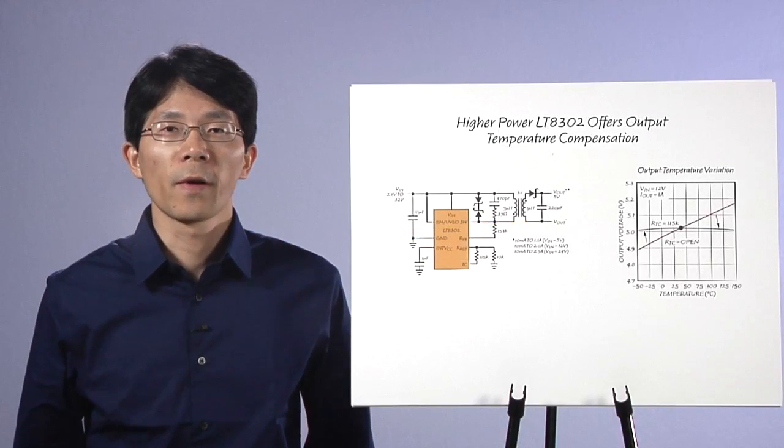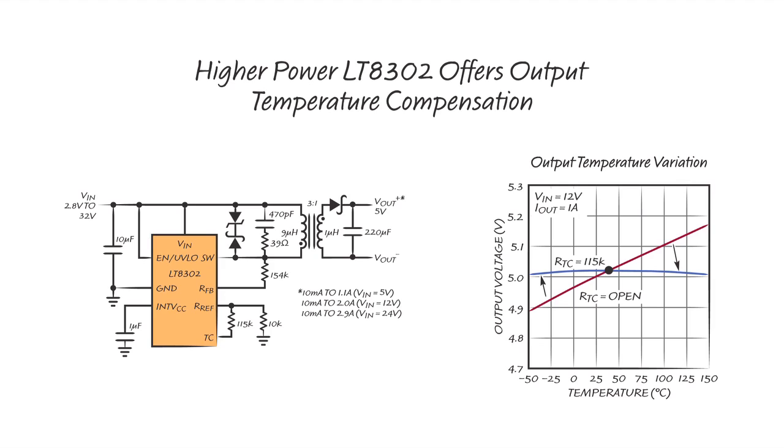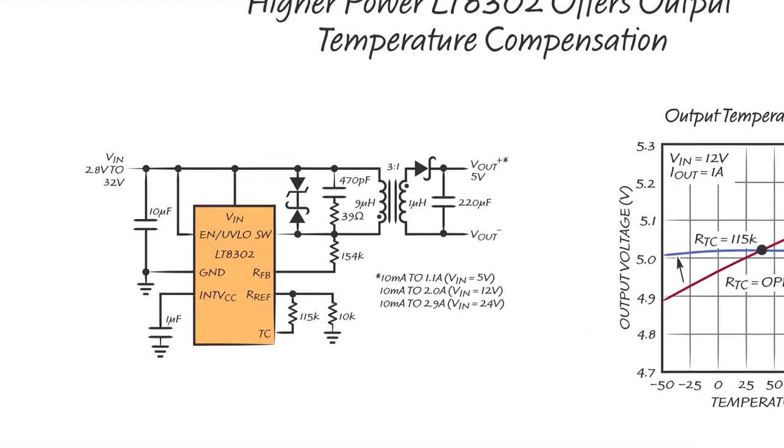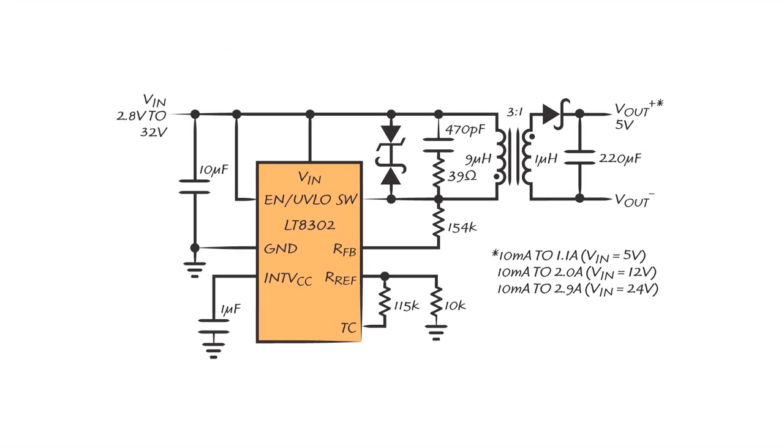Here is another 5-volt isolated flyback converter from 2.8-volt to 32-volt input using the higher power LT8302, another part in our Low IQ No Opto Flyback family.